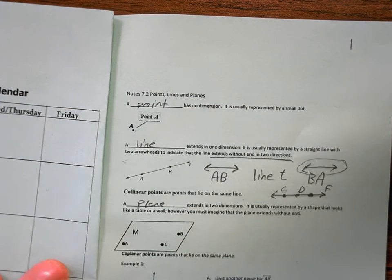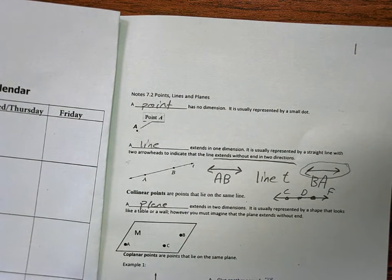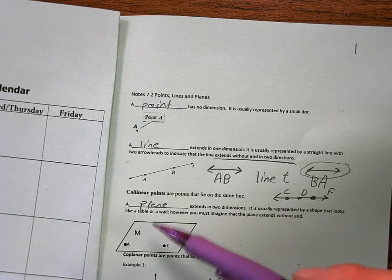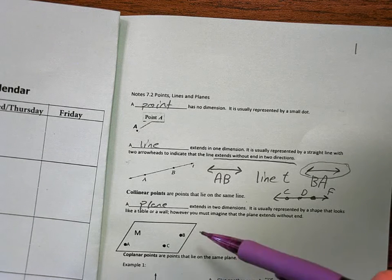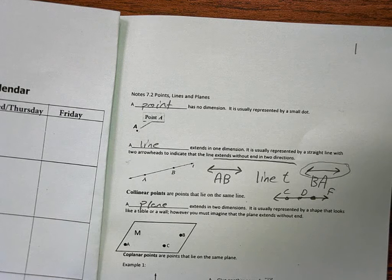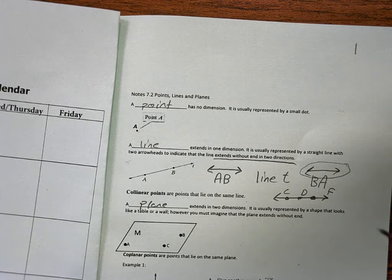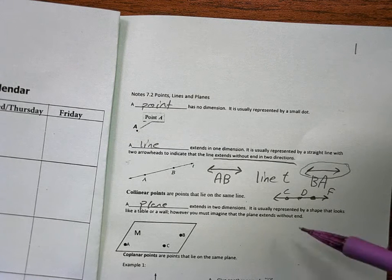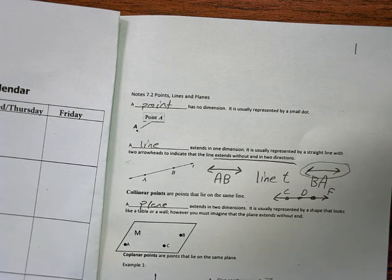Okay, a plane extends in two dimensions. It is usually represented by the shape that looks like a table or a wall. Kind of see what they mean? Like this would be the top of a table. However, you must imagine the plane extends without end.